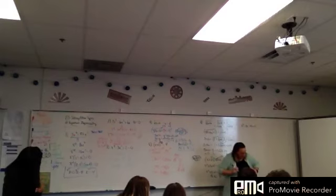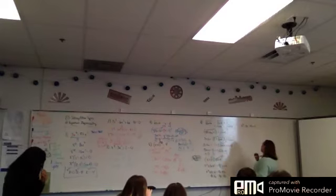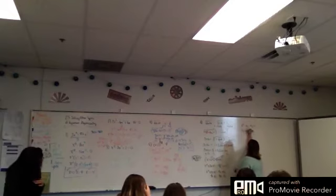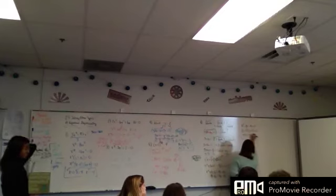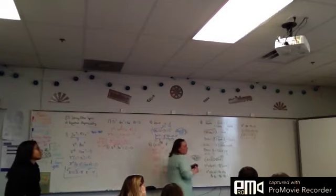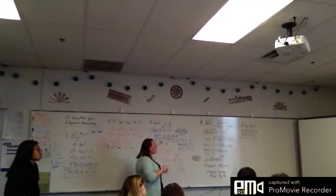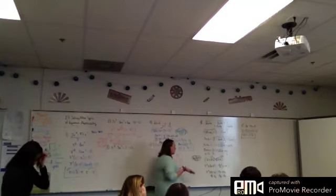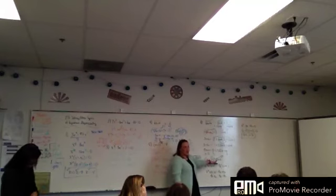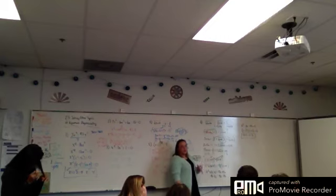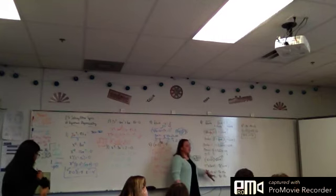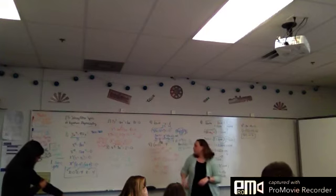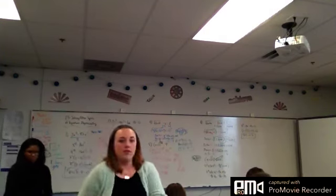You get x squared minus 2x minus 15 equals 0. What multiplies to give me negative 15 and adds to give me negative 2? Negative 5 and positive 3. So x minus 5, x plus 3 equals 0. You get x equals 5 and x equals negative 3. This is going to take you a long time. You're going to have to square it twice. When you get to that step, go ahead and square — do not try to divide by that leading coefficient. It will make it way too messy. Anytime you see two radicals, you're going to have to square the equation twice.